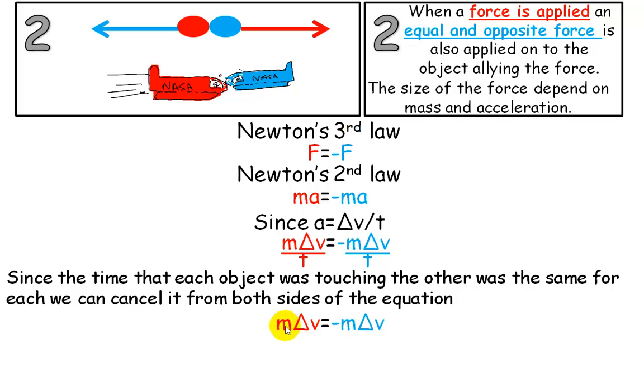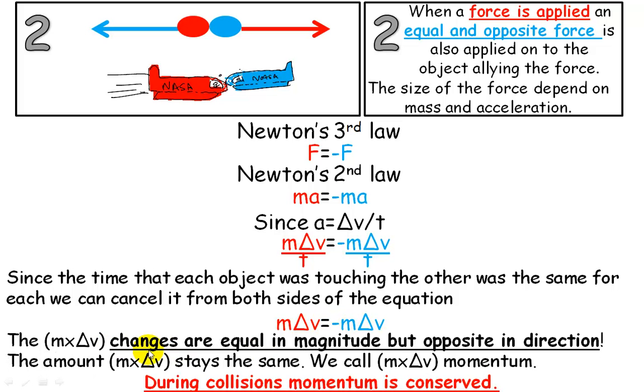This is basically it. We're saying that mass times change in velocity is the same in magnitude for both objects. So the changes are equal in magnitude, but they're opposite in direction. Now, it says here, what I wrote earlier, that mass times change in velocity is the same. We call mass times velocity momentum. That's the definition of momentum, mass times velocity.